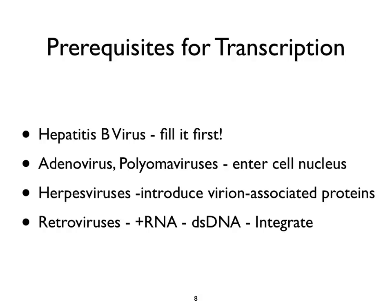Some herpesviruses introduce a virion-associated protein—they come loaded, ready to work. They still must bring their genome into the nucleus because that's where the host's transcriptional apparatus is, but this virion-associated protein plays a very important role in activation of immediate early herpesvirus genes. For HIV, that positive-stranded genome must be converted into double-stranded DNA and integrated into the host genome, where the long terminal repeats are seen as promoters and used to make HIV RNA—both genomic and messenger RNA.